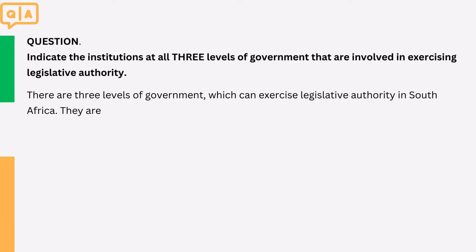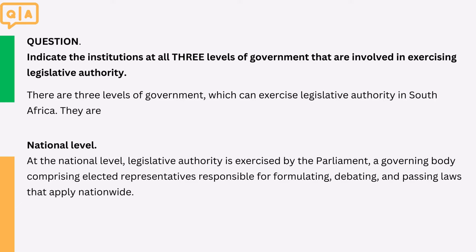There are three levels of government which can exercise legislative authority in South Africa. 1. National level. At the national level, legislative authority is exercised by the parliament, a governing body comprising elected representatives responsible for formulating, debating, and passing laws that apply nationwide.